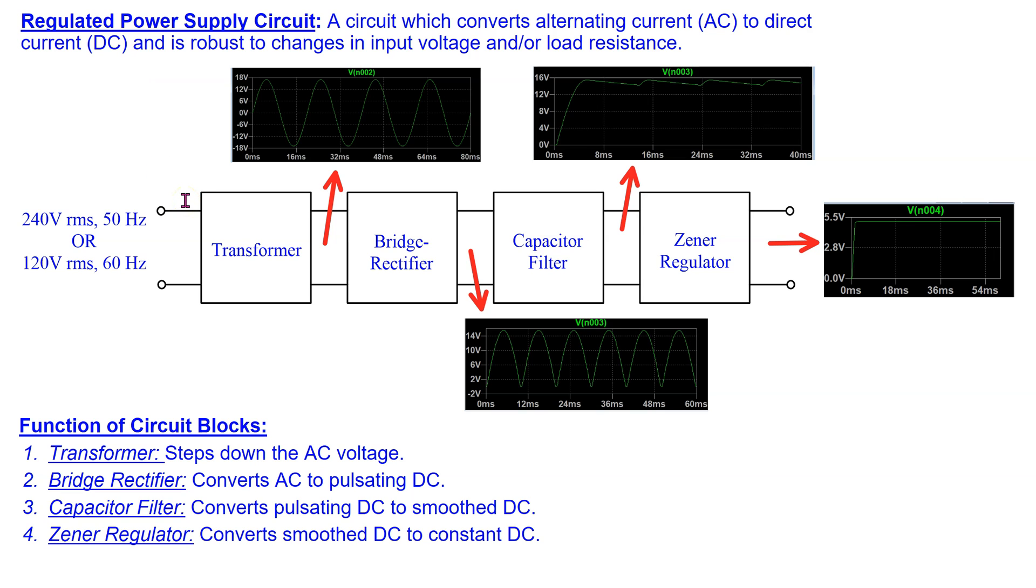The block diagram of a regulated power supply circuit is shown here. There are four main sub-blocks. The transformer steps down the large amplitude AC voltage to produce an AC voltage with a smaller amplitude.